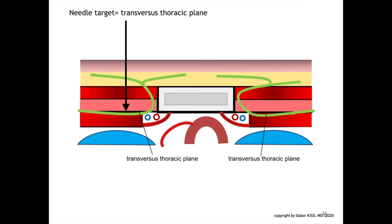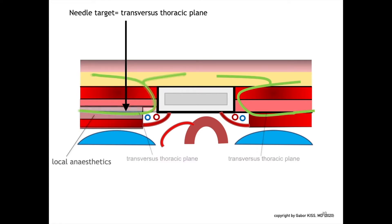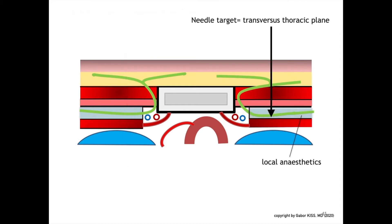On this sternum cross-section, the needle target for the TTP block is directed into the transverse thoracic plane, where local anesthetic is injected — displayed here as a blue solution — also shown on the contralateral side of the sternum.